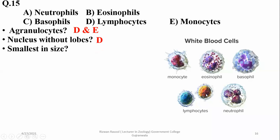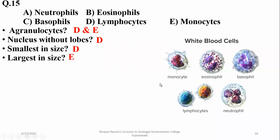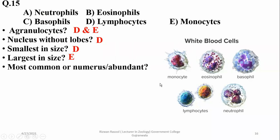Smallest in size among white blood cells are lymphocytes, and the largest are monocytes, which later form macrophages. Most abundant white blood cells are neutrophils, accounting for almost 62 percent. Least abundant are basophils, comprising less than one percent of the blood.